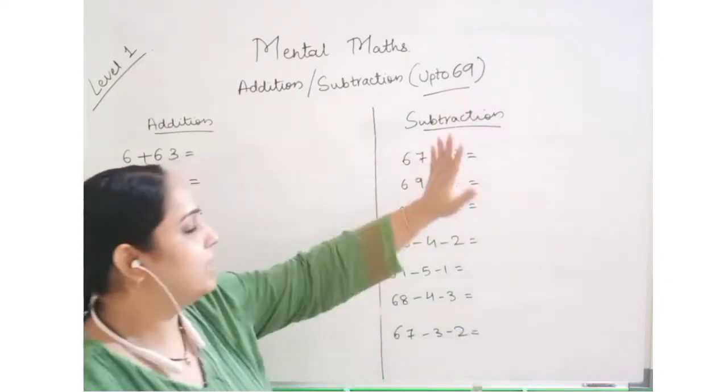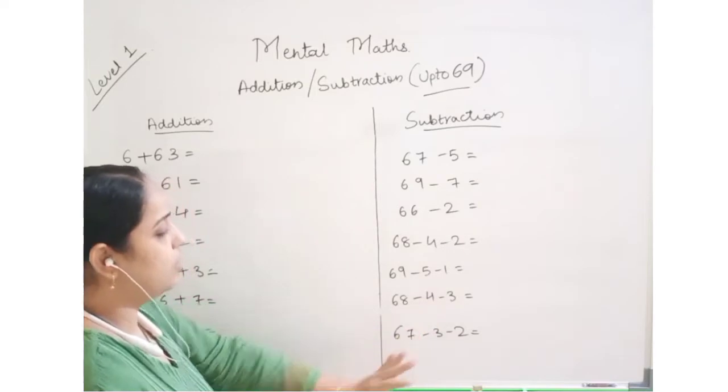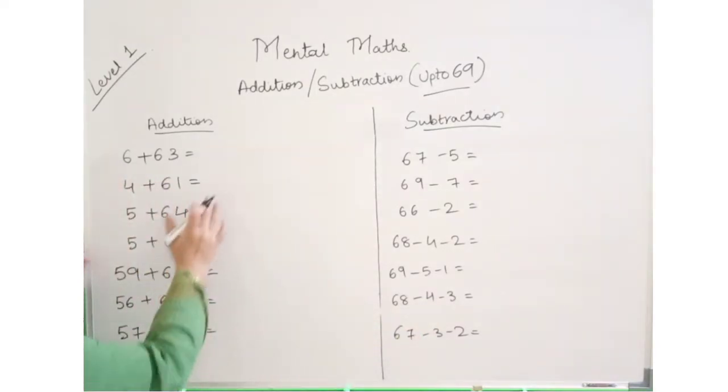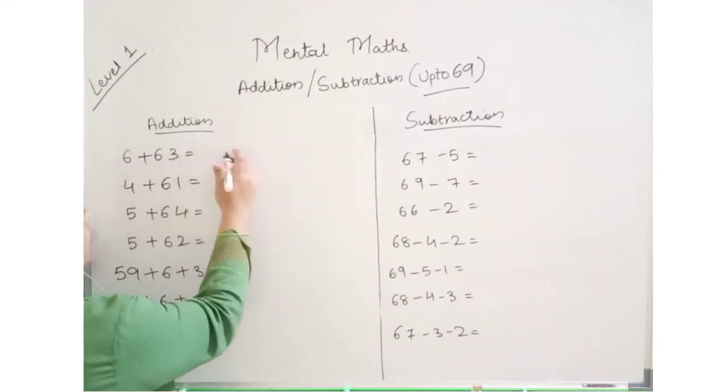So until 69, whatever addition and subtraction will be done with mental maths. Let's start with the first addition: 6 plus 63. Now how do we expand 63?